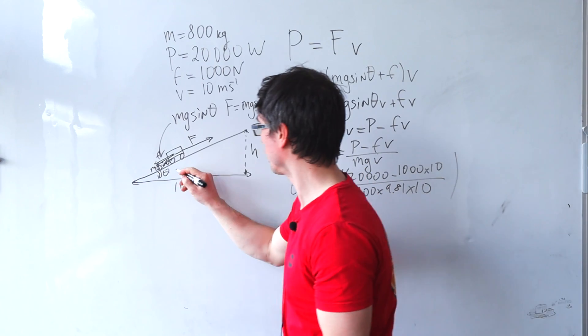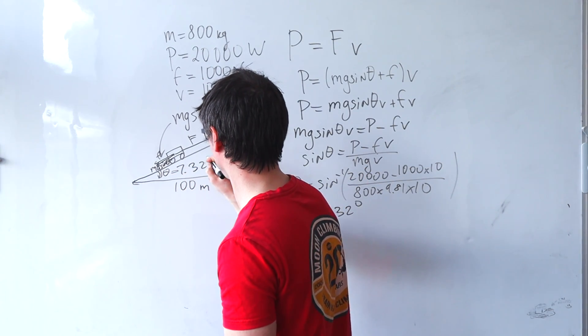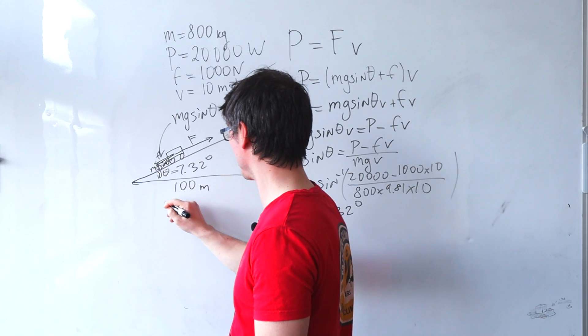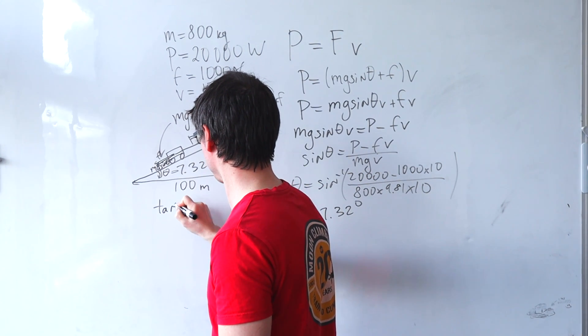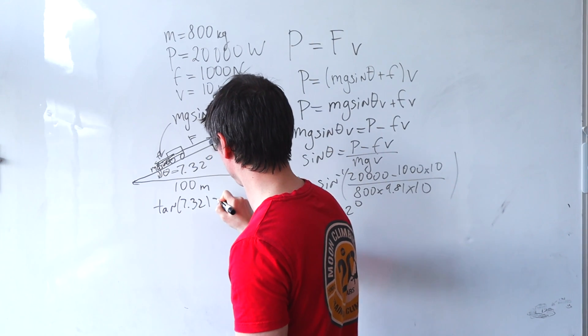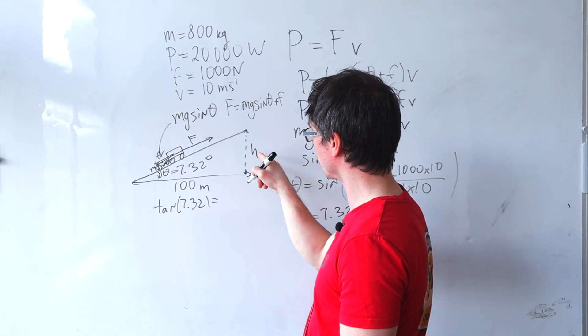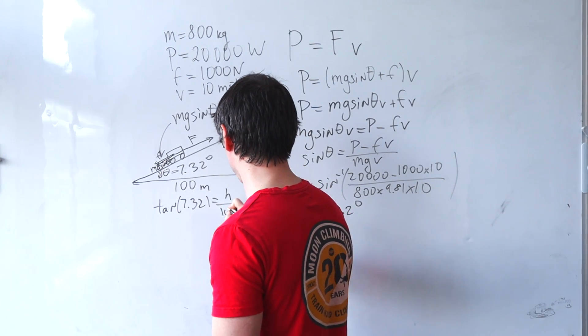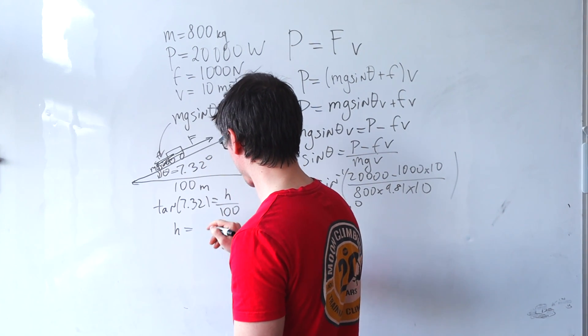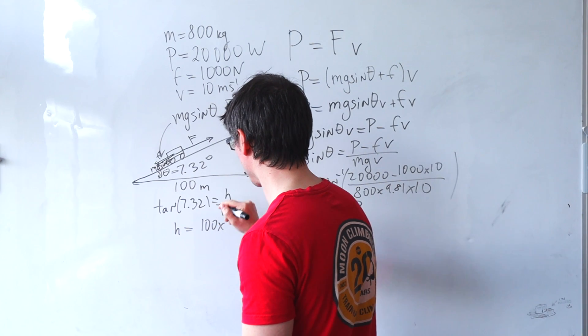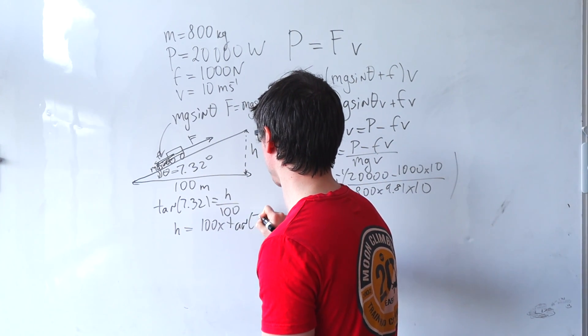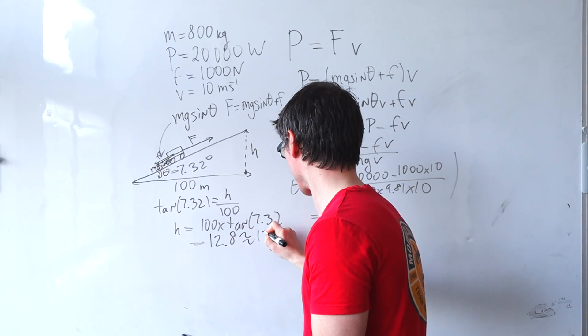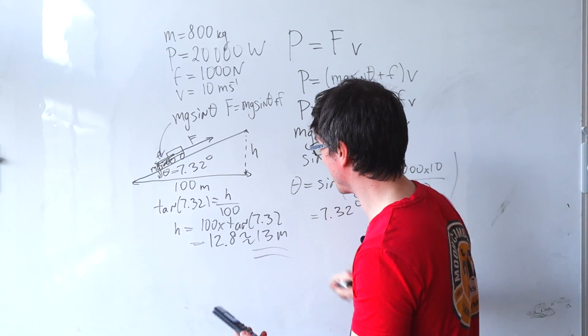So this angle here is 7.32 degrees. And now we can use the tangent to figure out our height h. Tan of 7.32 degrees will be equal to opposite over adjacent, which is h over 100, meaning the height will be 100 multiplied by the tan of the angle, or about 12.8 meters. So we'll just call it 13 meters.